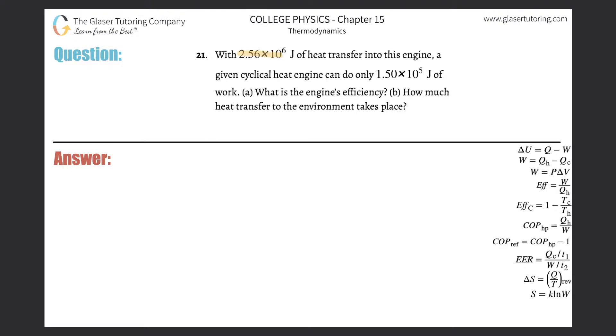Number 21. With 2.56 times 10 to the 6 joules of heat transfer into this engine, a given cyclical heat engine can only do 1.5 times 10 to the 5 joules of work. Letter A: What is the engine's efficiency?